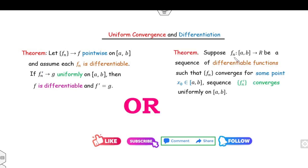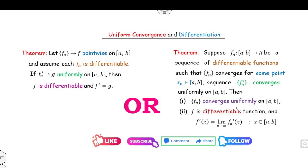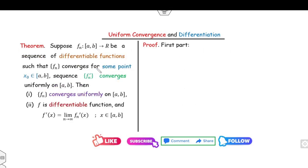This statement can also be read as: if we have a sequence of differentiable functions fn such that fn converges at some point and the sequence fn' converges uniformly, then fn converges uniformly and f is a differentiable function. The proof is very simple.